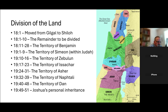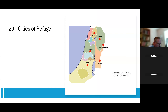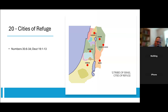At this point, all of the tribes have their territory except for one — the tribe of Levi. We need to get them settled. We have two different chapters here, 20 and 21. Chapter 20 deals with six of the Levite cities in particular, called the cities of refuge. God laid that out in Numbers chapter 35, verses 6 through 34, and again in Deuteronomy 19, the first 13 verses. These cities were designed for men to get a fair trial.